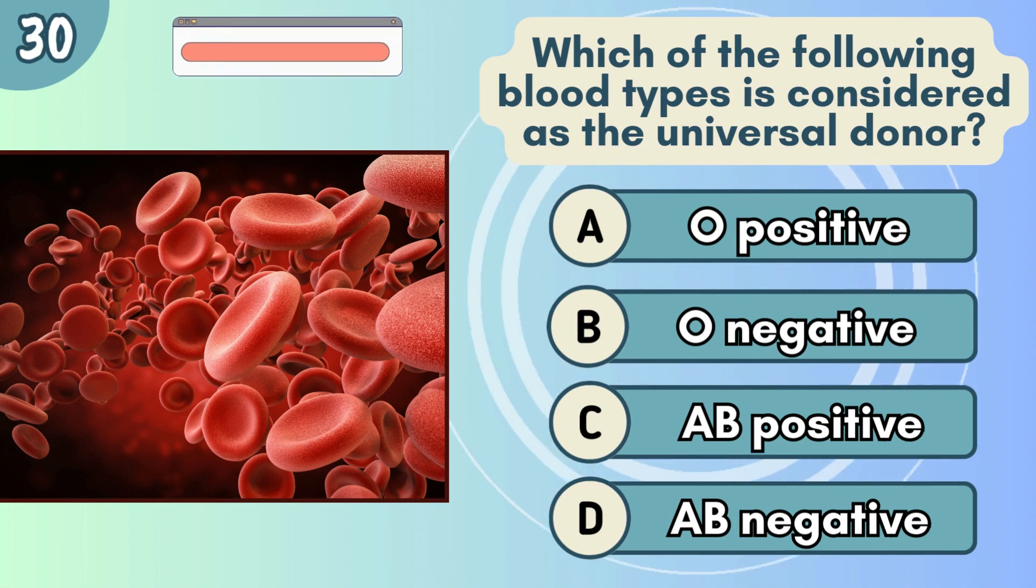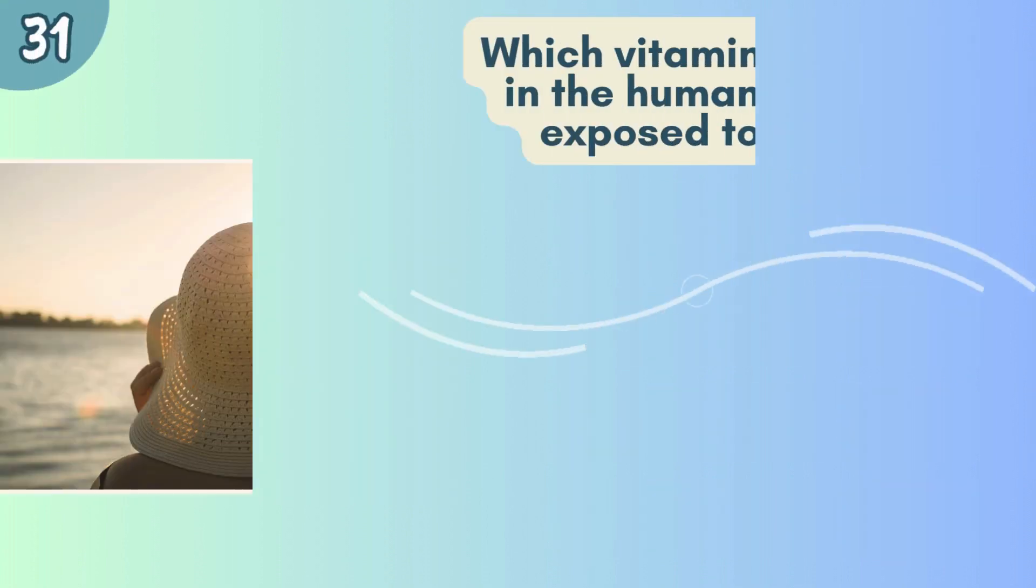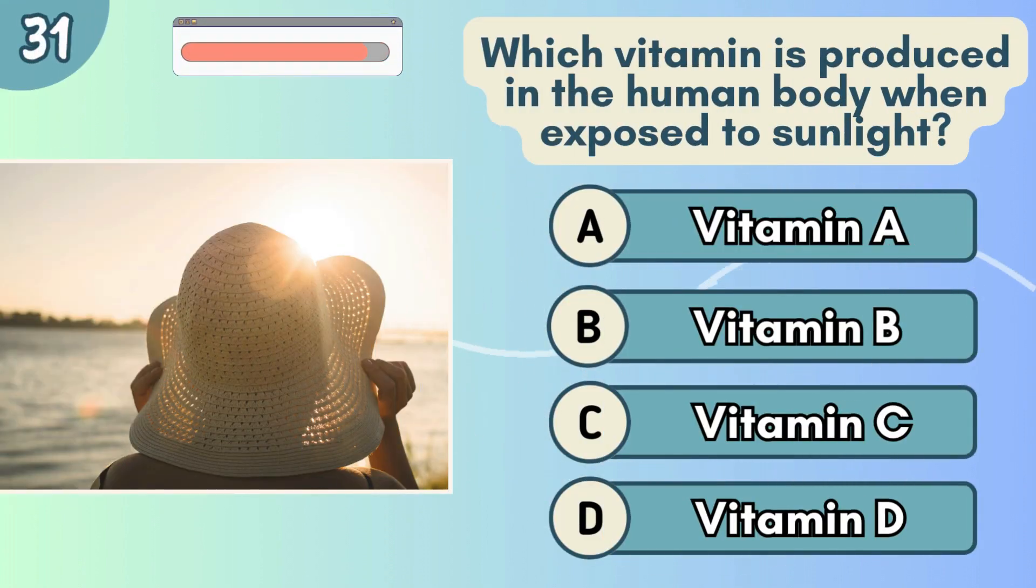Which of the following blood types is considered as the universal donor? Which vitamin is produced in the human body when exposed to sunlight?